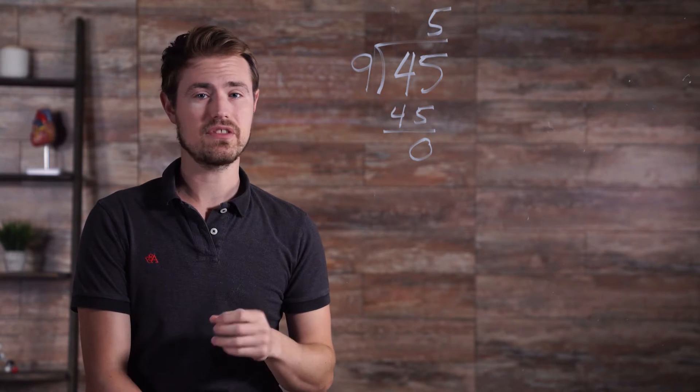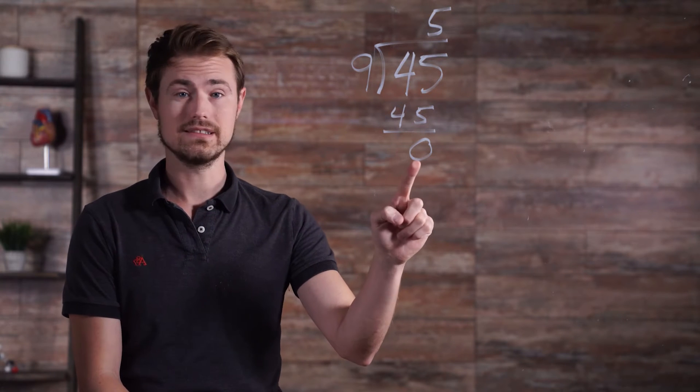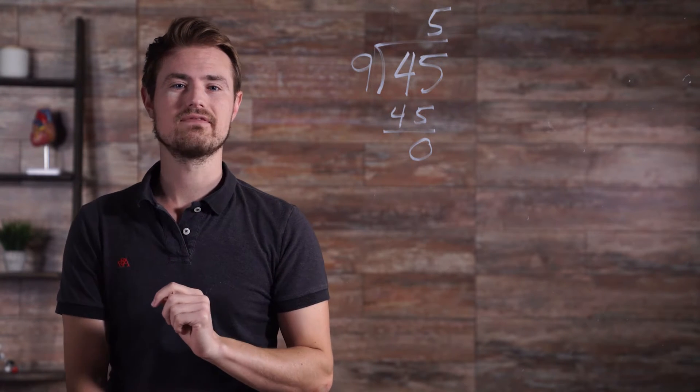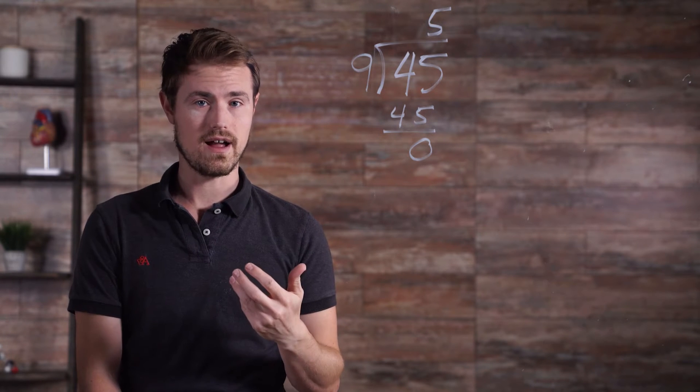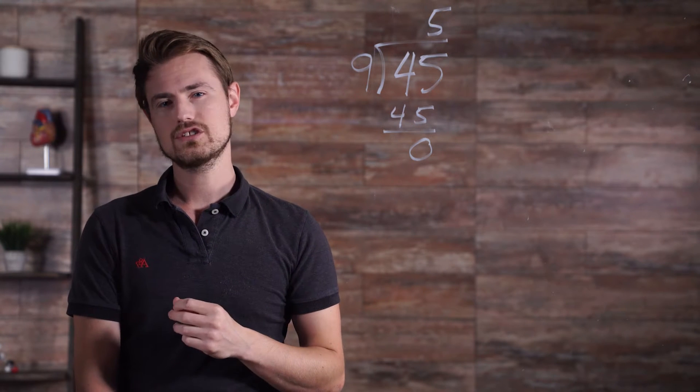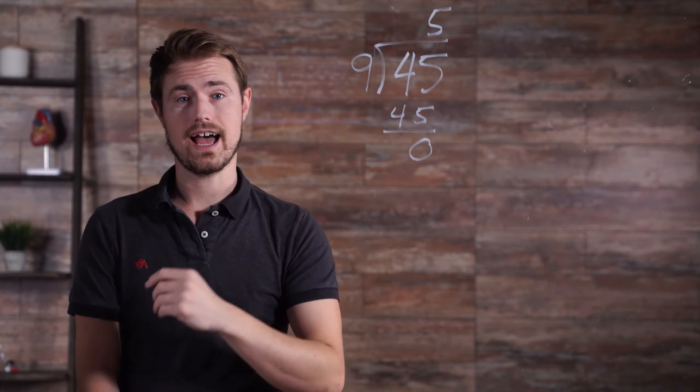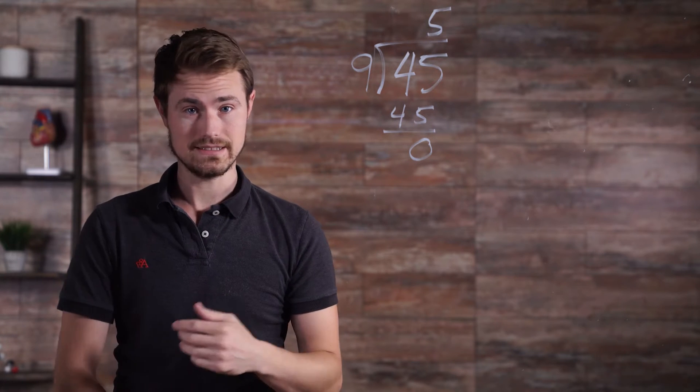Since we can see that after the division, the remainder is 0, this tells us that the divisor, 9, is a factor of the dividend, 45. So, the answer to our question, is 9 a factor of 45? Is yes.